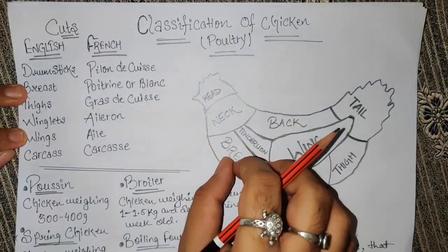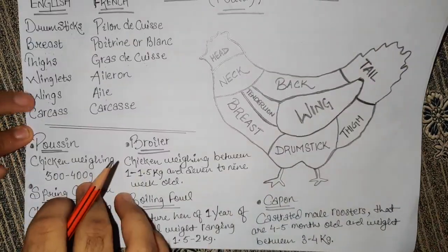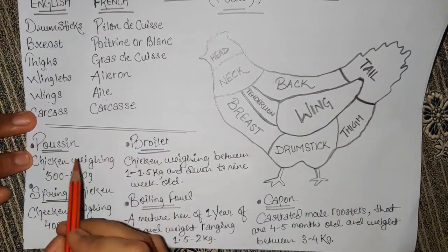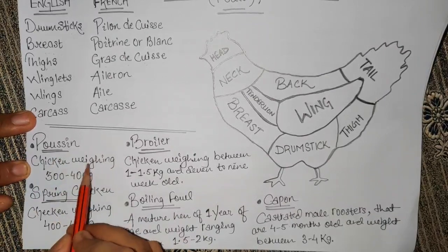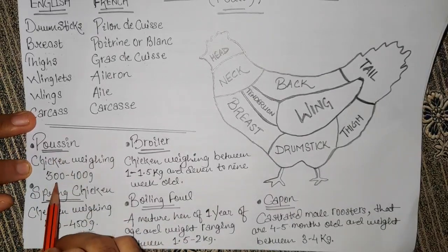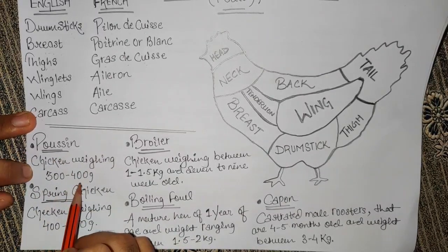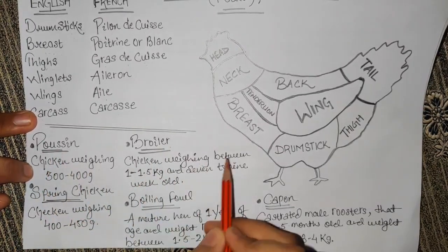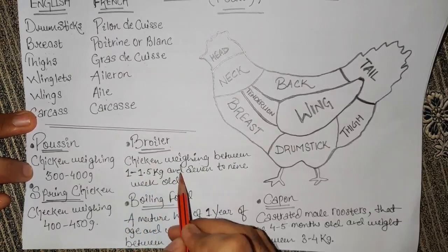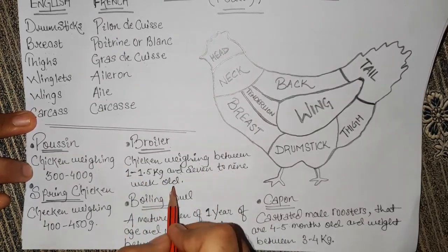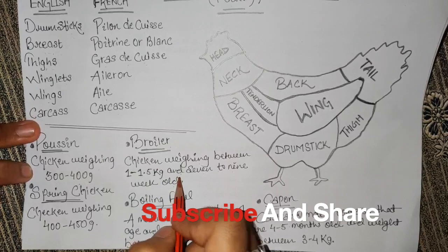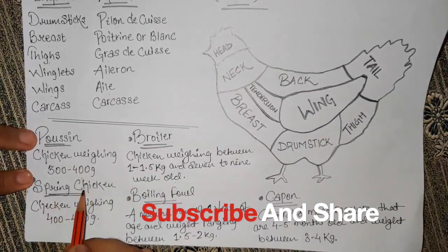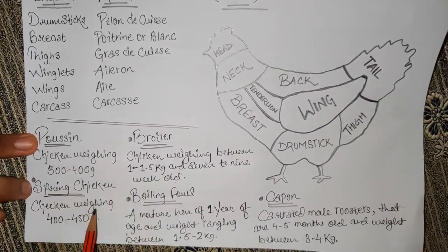Now let's talk about chicken types. The 'poussin' is a chicken weighing 300 to 400 grams. The broiler chicken weighs between 1 to 1.5 kg and is 7 to 9 weeks old. Then we have the spring chicken, which should weigh around 400 to 450 grams.